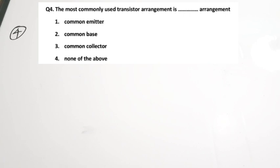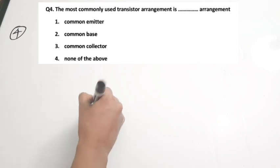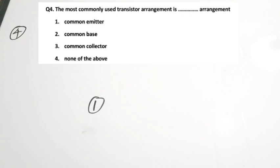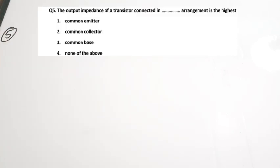Question 4: The most commonly used transistor arrangement is? We have just discussed this — correct answer is option 1, which is common emitter. In power electronics applications, we mostly use common emitter only.